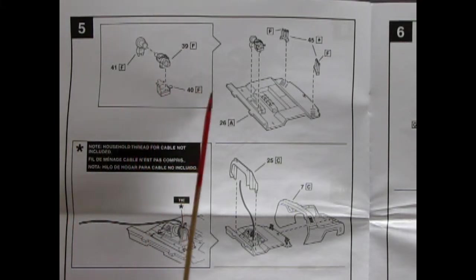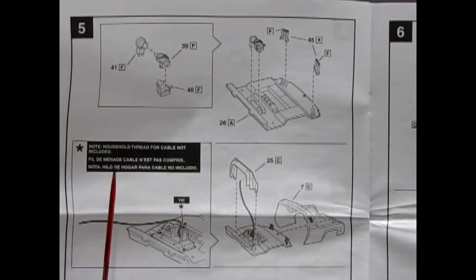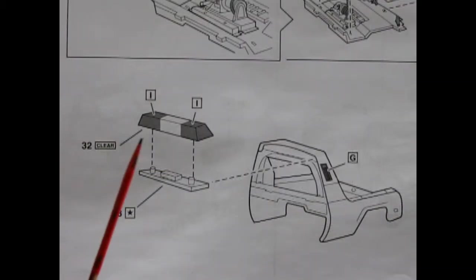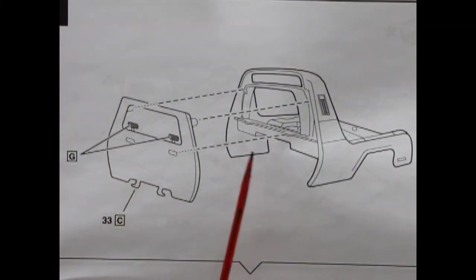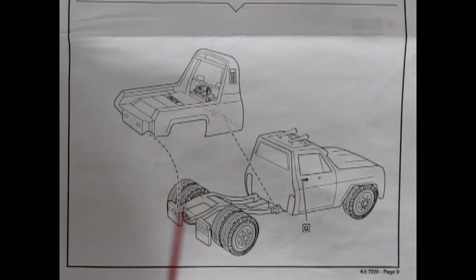This is where our build starts to get a little more intense. Here we have the three-piece winch for our tow truck as well as the controls which go on to the back pan. It says note: household thread for cable not included, so you'll have to supply that yourself. You'll tie it onto the winch here and leave it loose so when you put on this bar it can find a nice place to go.